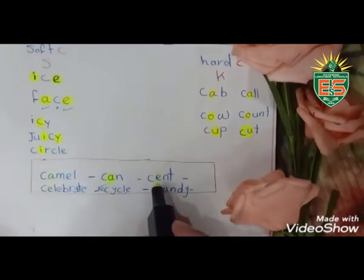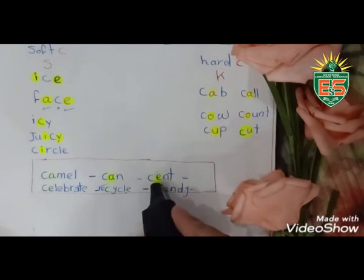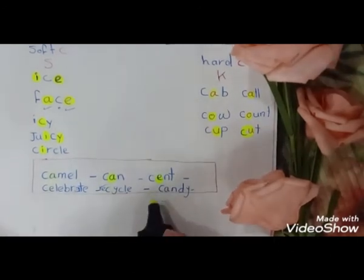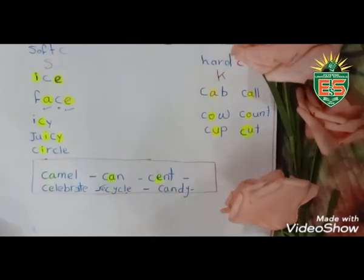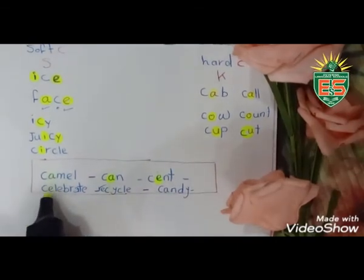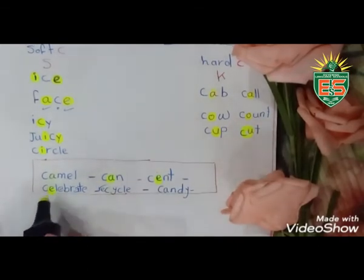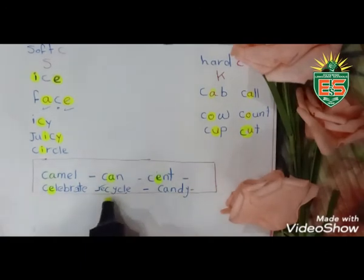I have E after C. I can't say 'kent', I say 'sent', because I have E after C—celebrate. Here I have E after C, so I pronounce it like 's'. Recycle—I have Y after C, so I say recycle.